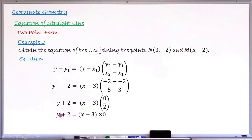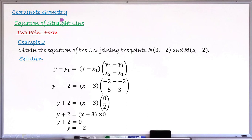Zero divided by two is zero. So we have y plus two equals (x minus three) times zero, and anything times zero is zero. Therefore y plus two equals zero, and taking two to the right-hand side gives y equals minus two. This is the equation of the line passing through these two points. With this, I have come to the end of this lesson. I hope you found it resourceful. We'll see more of coordinate geometry in our next lesson.